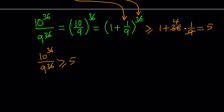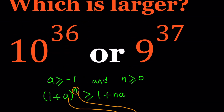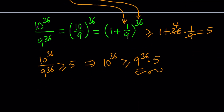This tells us 10^36 is greater than or equal to 9^36 times 5. But we're trying to compare to 9^37, and we need a factor of 9 to get there. We'd need to multiply by 9/5, which is greater than 1, raising the question of whether the inequality still holds. We need a better bound.